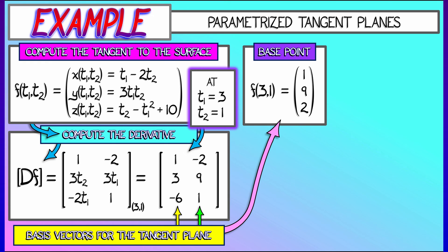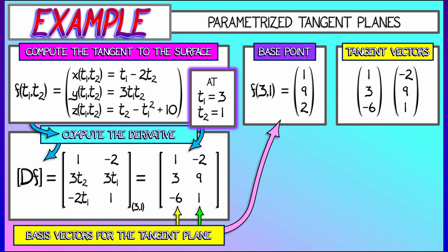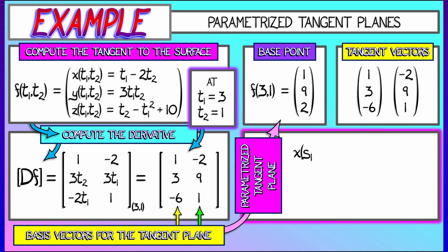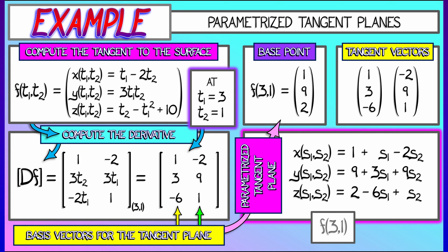Now, we're going to take the two columns of the derivative, work with those as tangent vectors, as basis vectors for this parametrized tangent plane, where we're giving the x, y, and z coordinates as a function of new parameters, s1 and s2. This is the same formula we've been working with, the same formula as in 1d. But look at how this decomposes. The constant terms are the base point. That's f of 3, 1. That's the 1, 9, and 2.